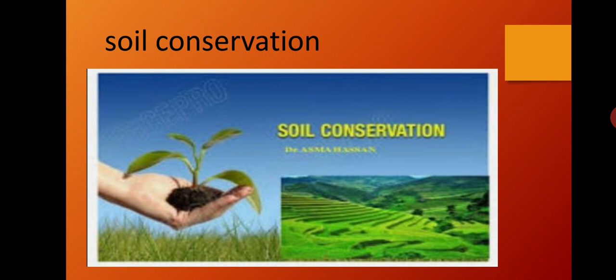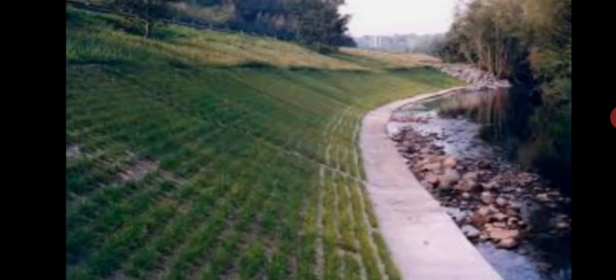Now let us study about soil conservation. Just as water needs to be conserved, soil also needs to be conserved. It is necessary to protect the fertile soils of farmlands from getting washed away by rain. Soil conservation includes construction of embankments and planting trees on them — you can see in the image how embankments are done and small plants are planted to reduce soil erosion.